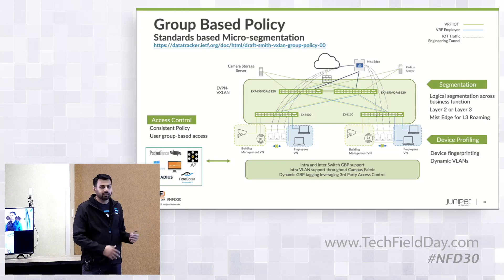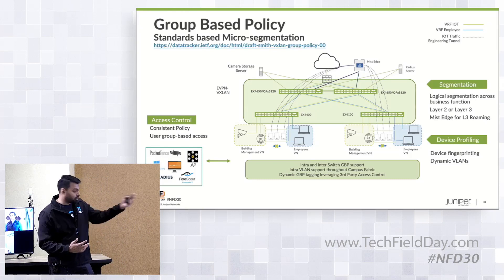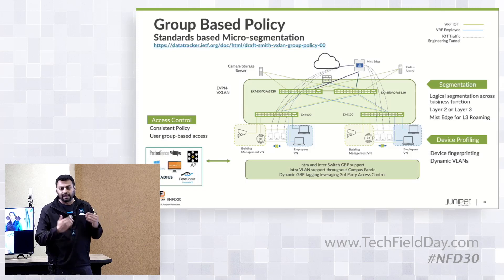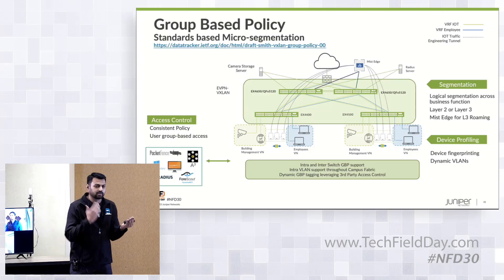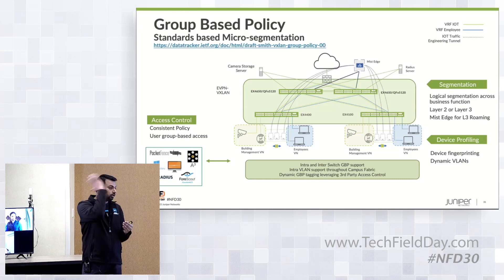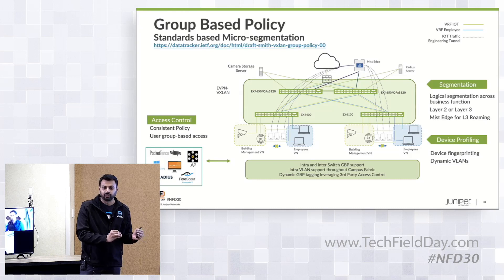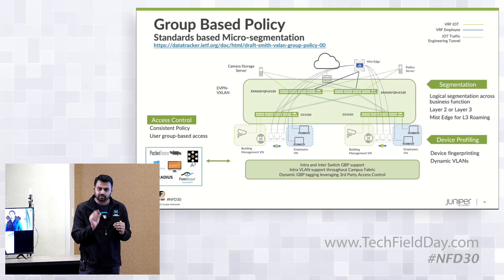A use case for that: when you onboard a device, whatever your favorite tagging method is, tag them and say cameras cannot talk to cameras — camera tag cannot talk to camera tag. Then add a policy saying cameras can only talk to their controller, which could be an IP address or another tag. You don't even want broadcast to be exchanged between them — that's the true power of micro-segmentation.